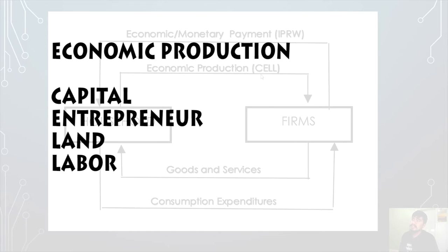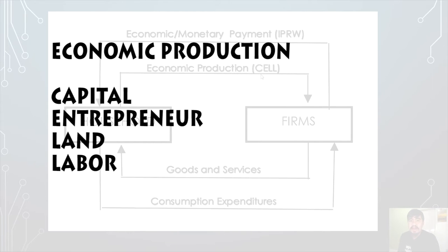Capital is the money needed in order to start an economic activity or business. Entrepreneur is basically the skills needed to manage a business or stimulate an economic activity. Labor is how we generate those raw materials into something that is consumable — for example, farming to grow rice that we consume. Land is where we get our raw materials, such as food from agriculture — where we get palay and fruits from the soil.